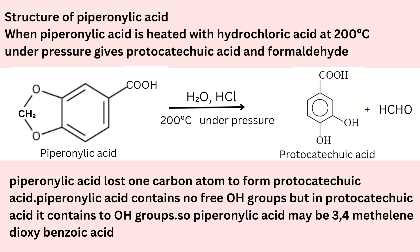Structure of piperonilic acid: When piperonilic acid is heated with hydrochloric acid at 200 degrees Celsius under pressure, it gives protocatechuic acid and formaldehyde. Piperonilic acid lost one carbon atom as formaldehyde to form protocatechuic acid. Piperonilic acid contains no free phenolic groups but protocatechuic acid contains two phenolic groups. So piperonilic acid may be 3,4-methylene-dioxy-benzoic acid. We confirm this structure by synthesis of piperonilic acid from protocatechuic acid.